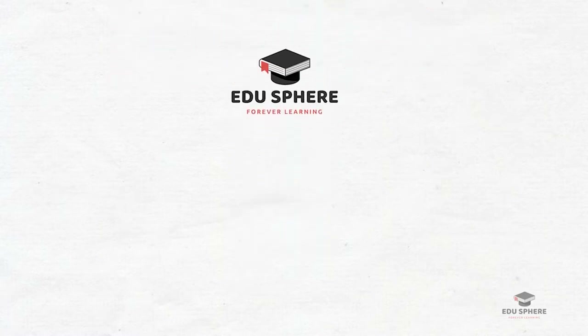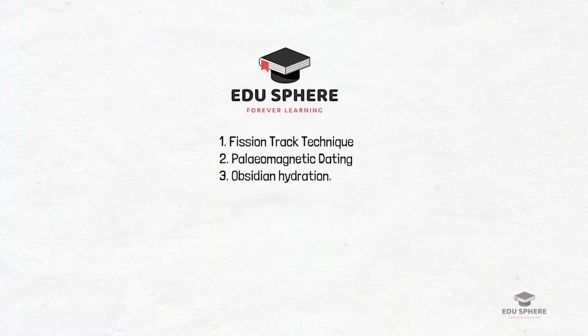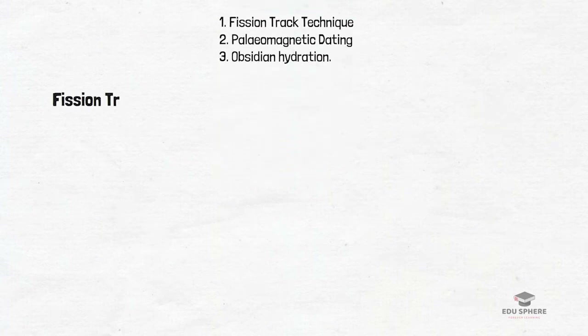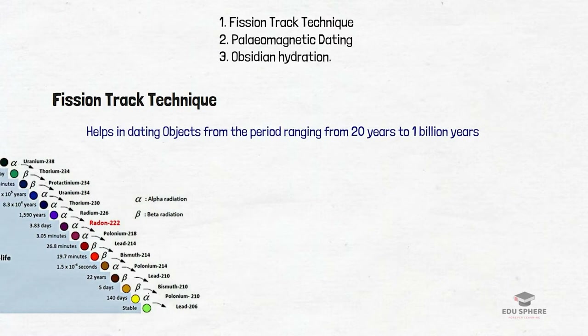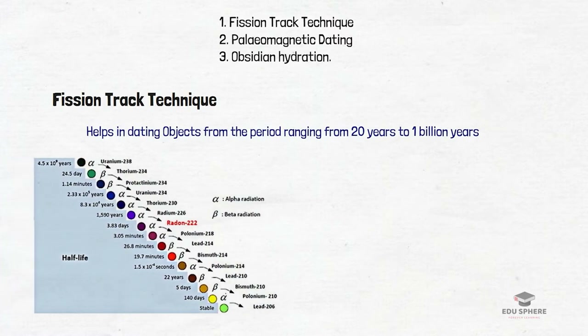Hello friends, in this video we will be covering three absolute dating methods. Let us start with the fission track dating method. This technique helps in dating archaeological materials ranging from almost 20 years to 1 billion years before the present. This is one of the simplest of several dating techniques, because it depends on the statistically steady decay of radioactive nuclides such as uranium.